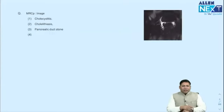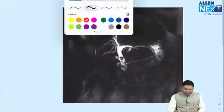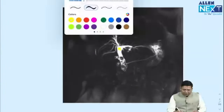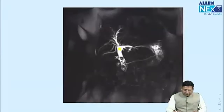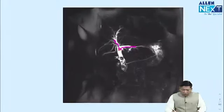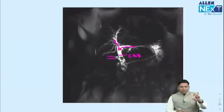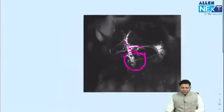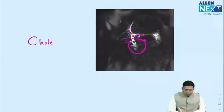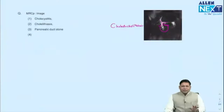From GIT: an MRCP image was shown. The image clearly showed the hilum, right duct (anterior and posterior), left duct (middle and lateral), CBD, and cystic duct with a stone. No contrast in the gallbladder makes it invisible. Multiple filling defects in the CBD — this is a classical image of choledocholithiasis. The answer is choledocholithiasis, a very straightforward question.